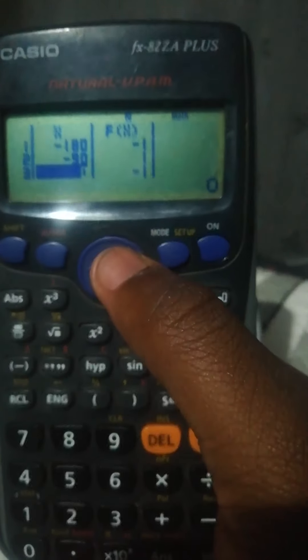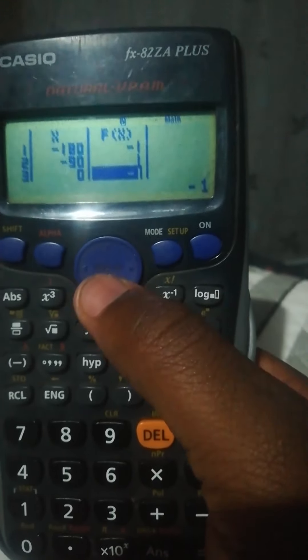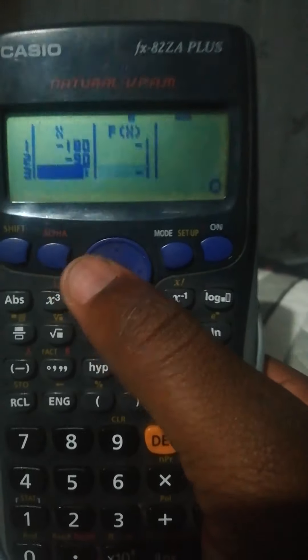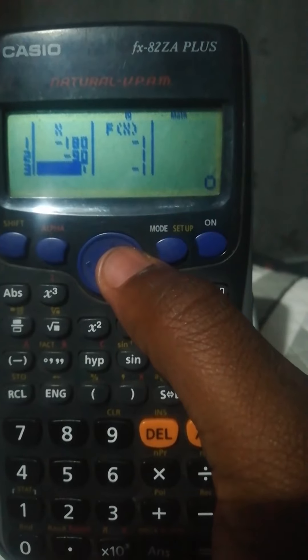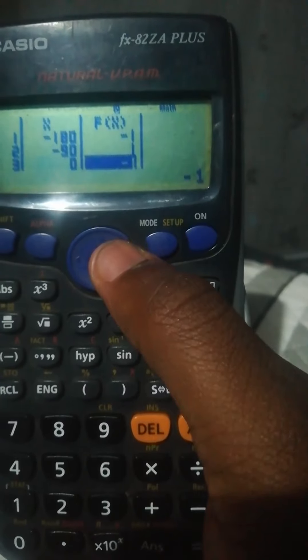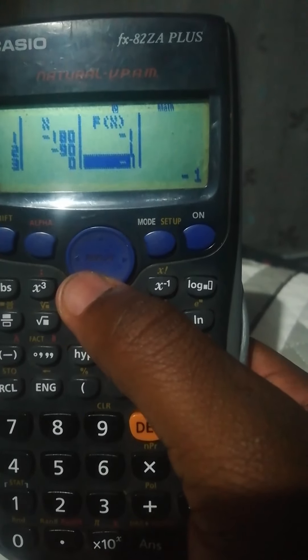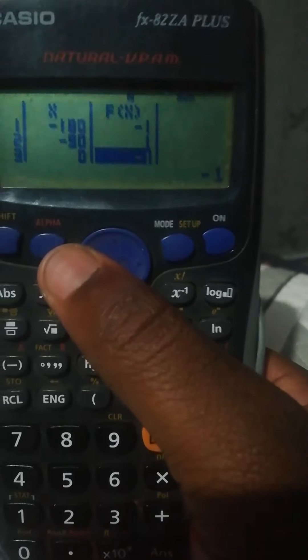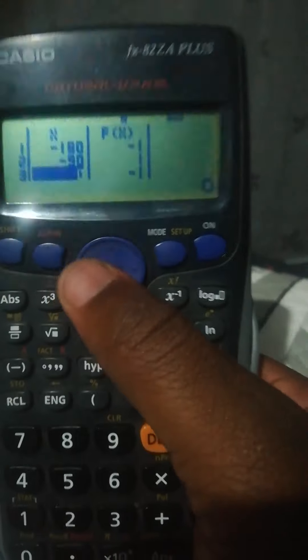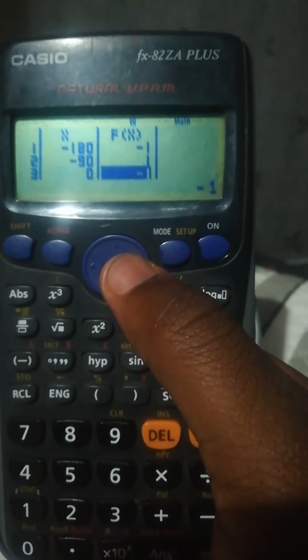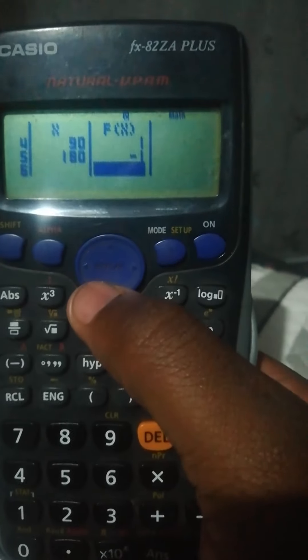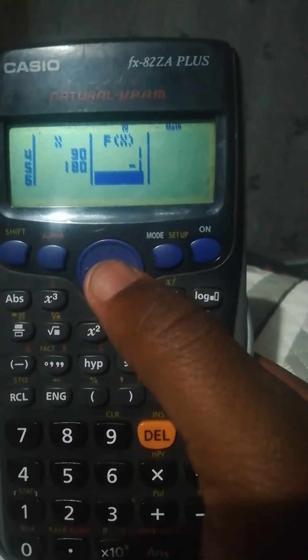But then from there you can see it only shows the y-intercept at -1 when x is zero, y is -1. So this is the y-intercept because x is zero and then y is -1.